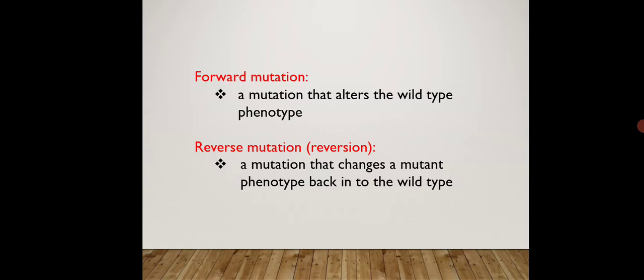Next is forward mutation. Forward mutation is a mutation that changes the wild type phenotype. You need to keep two words in mind: wild type and mutant type. Wild type means the original gene sequence. Mutant type means there is some mutation in the gene — it may be any type of mutation. So forward mutation is a mutation that changes the normal wild type phenotype.